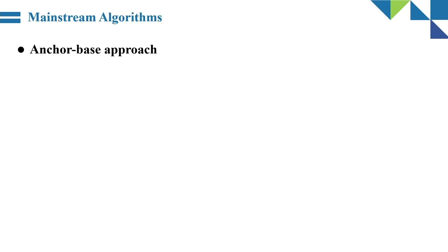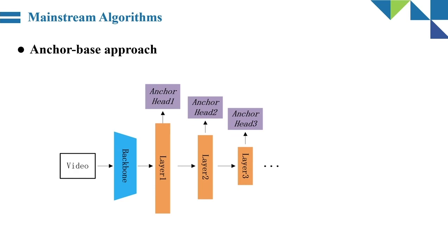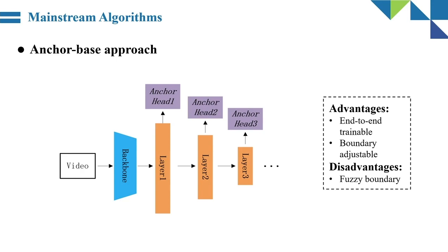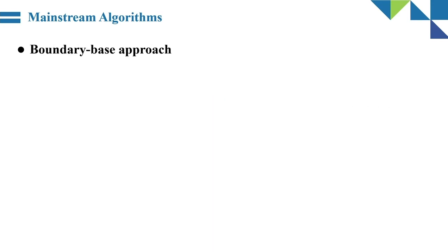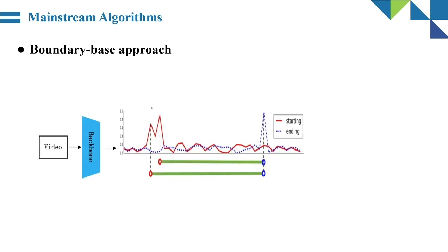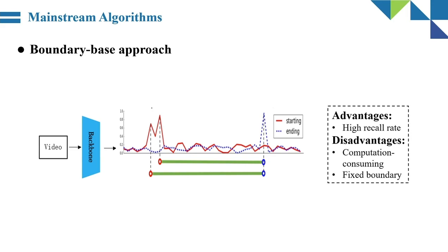Next, mainstream algorithms. First, the anchor-based approach may borrow from the SSD method in object detection and usually builds a multi-layer pyramid on the features. Advantages: end-to-end training, boundary adjustable. Disadvantage: fuzzy boundaries. Second, the boundary-based approach is mainly composed of partitioning action start and end time points to form a proposal, making it a bottom-up method. Advantages: high recall rate. Disadvantages: computation-consuming and fixed boundary.